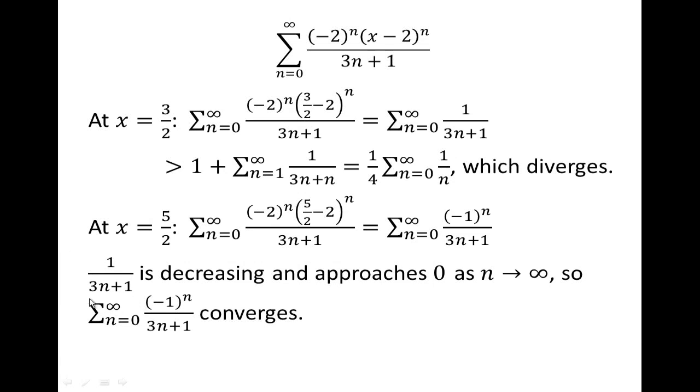Well, 1 over 3n plus 1, as n gets larger, this gets smaller. So it's decreasing. And as n gets larger, the denominator is very, very large. The numerator is 1. It's going to approach 0. So this converges. It converges at 5 halves,